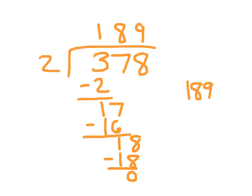189 is our quotient or our answer. For our check, we take our answer, 189, and multiply it by the divisor, which is 2. 2 times 9, which is 18. 8, regroup the 1. 2 times 8 is 16, plus 1 is 17. 2 times 1 is 2, plus 1 is 3. So our answer checks.